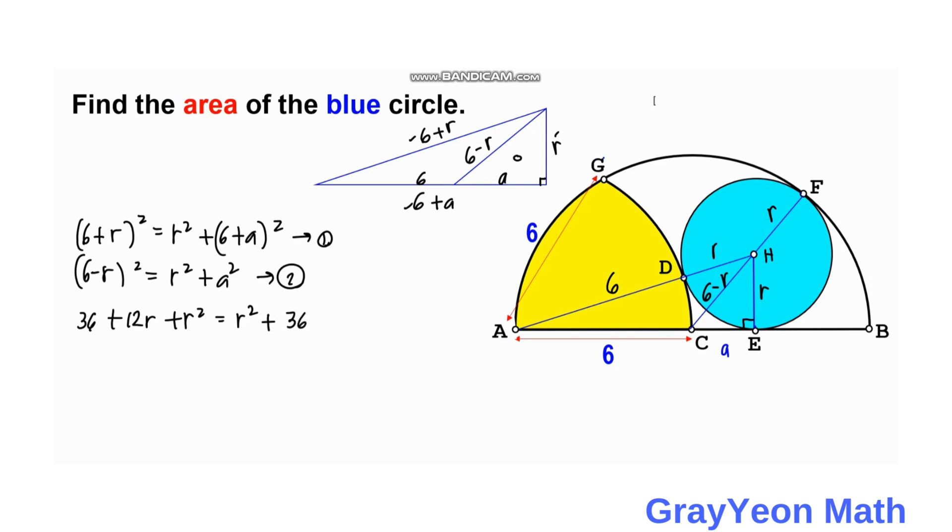then plus 12A plus A squared. Then for the second one we have 36 minus 12R plus R squared is equal to R squared plus A squared.